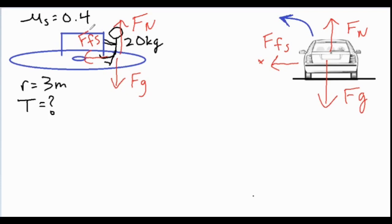We know the coefficient of static friction is 0.4, the radius of the merry-go-round is 3 meters, the person is 20 kilograms, and we're looking for the period. As I mentioned, that's the amount of time it takes to complete that circle.